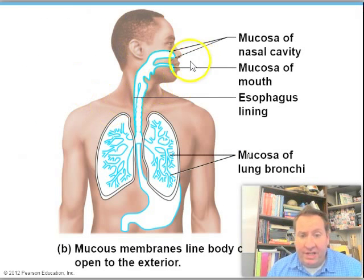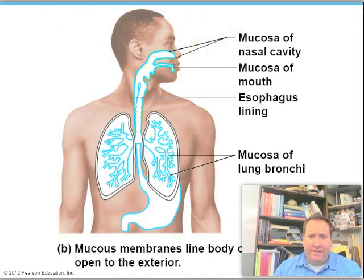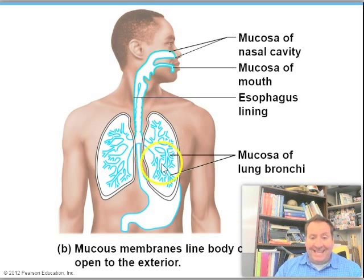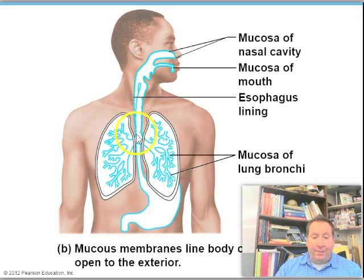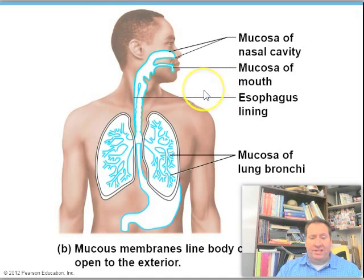Mucous membranes line all body cavities open to the exterior body surface — things like your mouth, esophagus, stomach, large and small intestine, and inside your lungs. These membranes are slippery to help reduce friction. For example, inside your nose is a mucous membrane — that mucus helps trap incoming particles, debris, viruses, and bacteria. Moving down from your mouth through your esophagus, trachea, bronchi, and into the digestive tract, all of that is lined with mucous membrane.